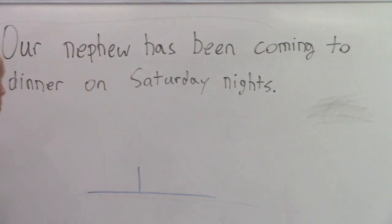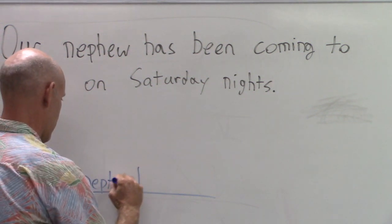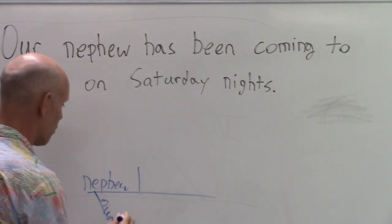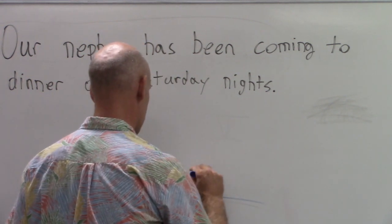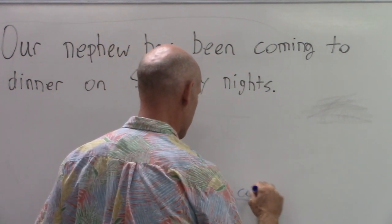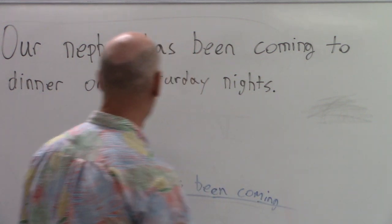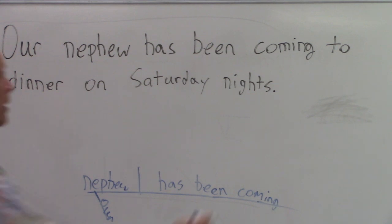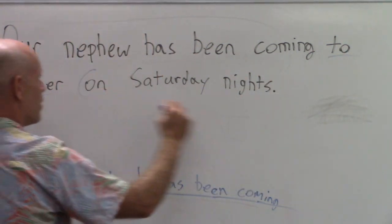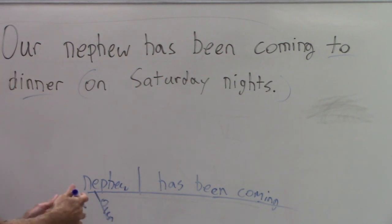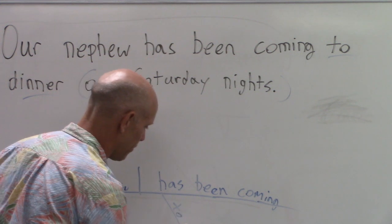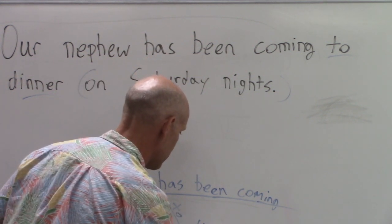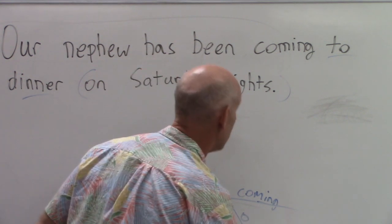Now let's look at the first one. As always, the diagram is going to help us figure it out. What's the subject? Dude. And what is he doing? The whole thing — has been coming — that's your verb. And the rest of it: there are two prepositional phrases. Are they talking about the nephew, or are they giving you time and place? That's going to be adverbial — to dinner and on certain nights.